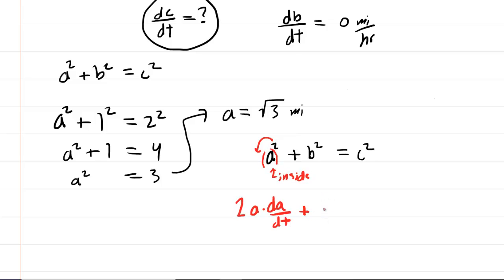Following the same procedure for the other terms, we would have 2 times B to the power of 1, db/dt. And then this will equal 2 times C to the power of 1, times dc/dt.